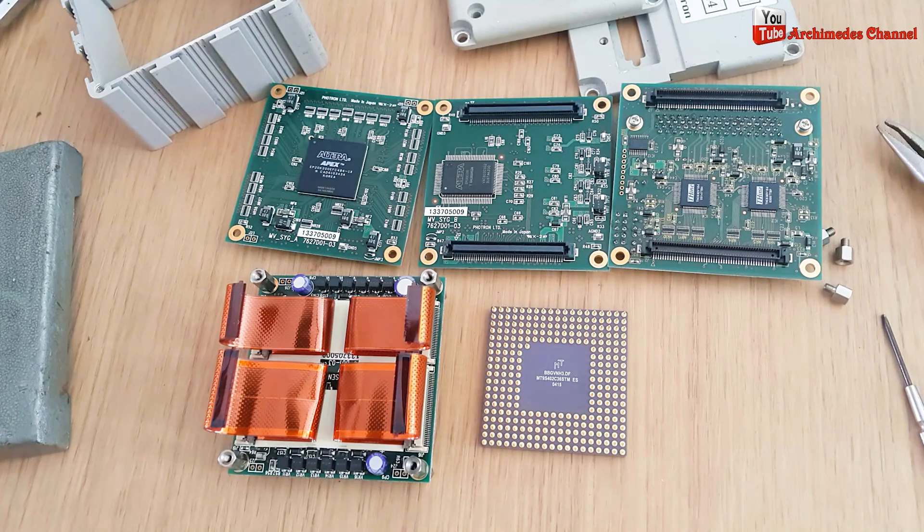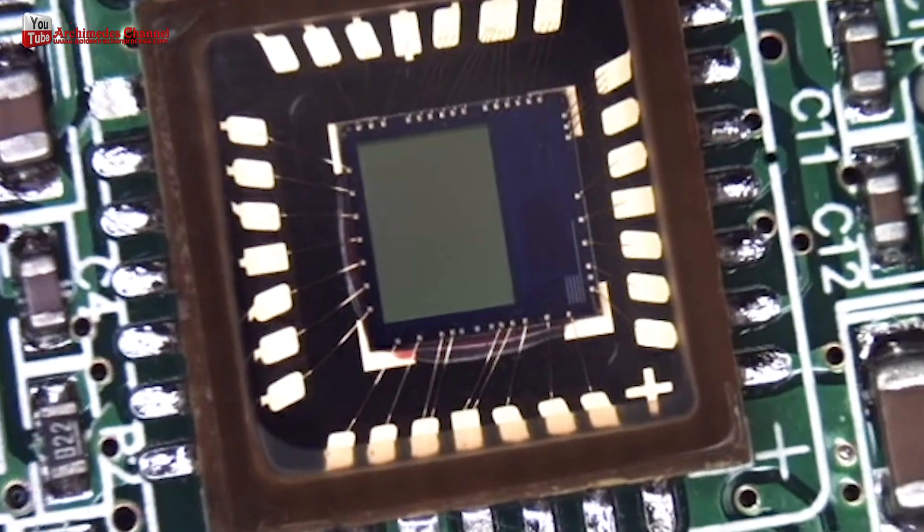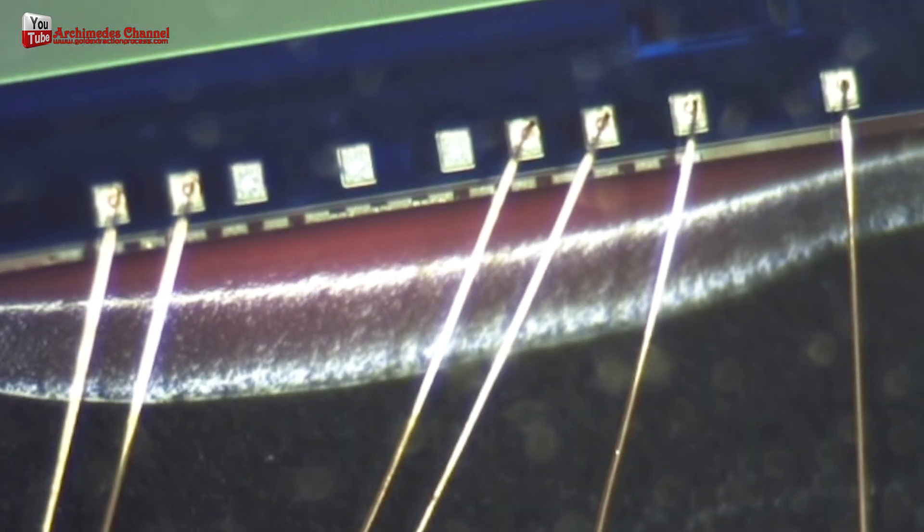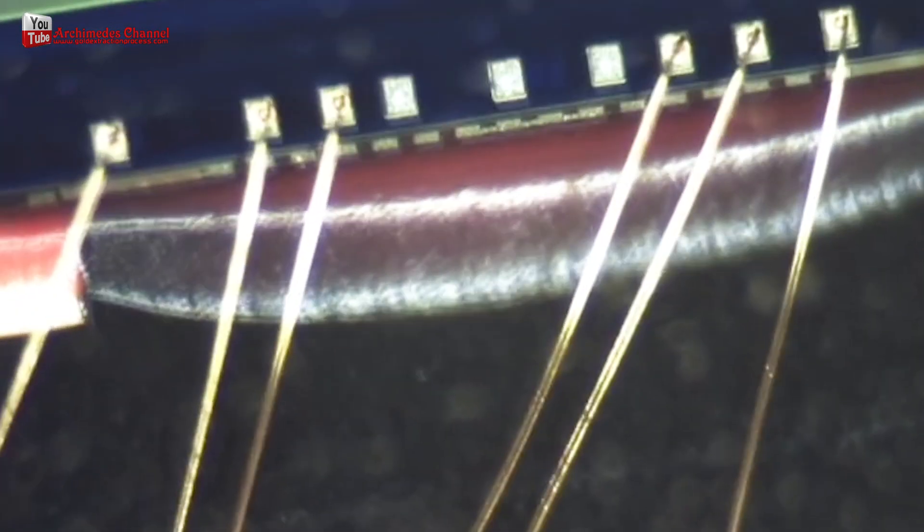Gold wire is often used in electronic components such as connectors, switches and integrated circuits. The gold is used because it is an excellent conductor of electricity and is resistant to corrosion.